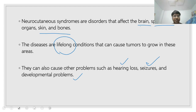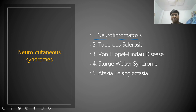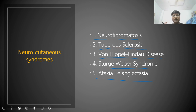Now, what are your neurocutaneous syndromes? The list includes a very important one — neurofibromatosis — then tuberous sclerosis, then Von Hippel-Lindau disease, Sturge-Weber syndrome, and ataxia telangiectasia. We have a very big list, but among them these are the common ones.